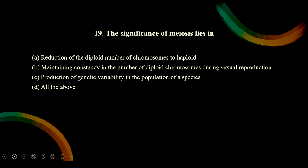The significance of meiosis lies in: A — reduction of diploid chromosome number to haploid, which is why meiosis is called reduction division; B — maintaining constancy in diploid chromosome number during sexual reproduction; C — production of genetic variability in the population because of gene transfer during crossing over. All three statements are correct, so the correct option is D, all of the above.